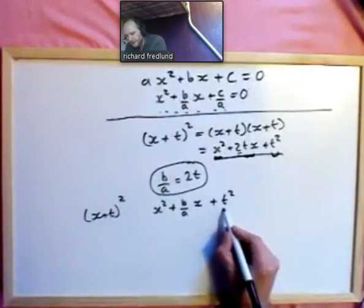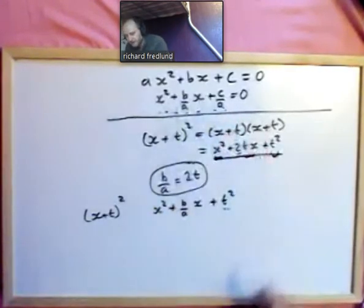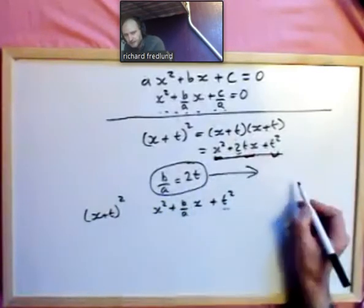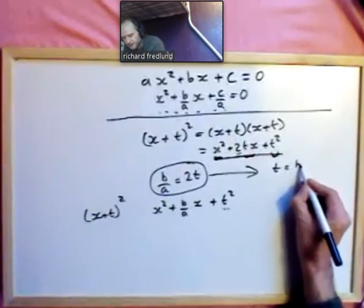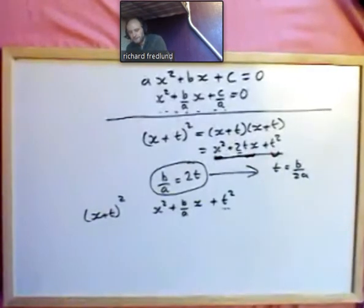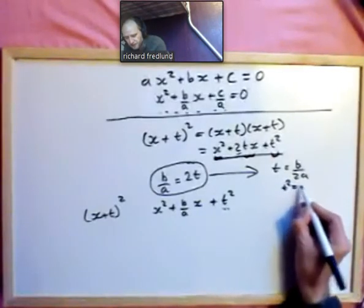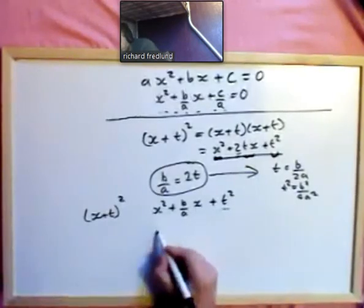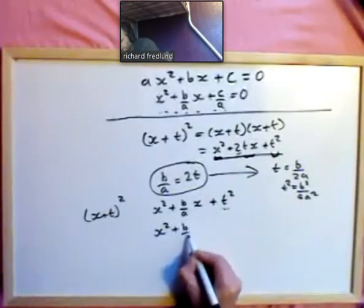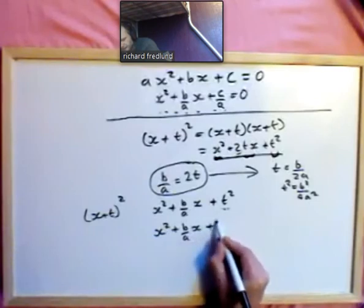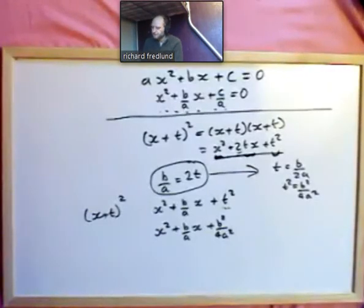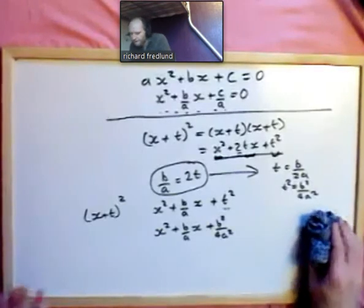There's no t in the original equation, so let's find t in terms of the coefficients. Rearranging b-over-a equals 2t gives t equals b over 2a, which means t squared equals b squared over 4a squared. Substituting: x squared plus b-over-a times x plus b squared over 4a squared.